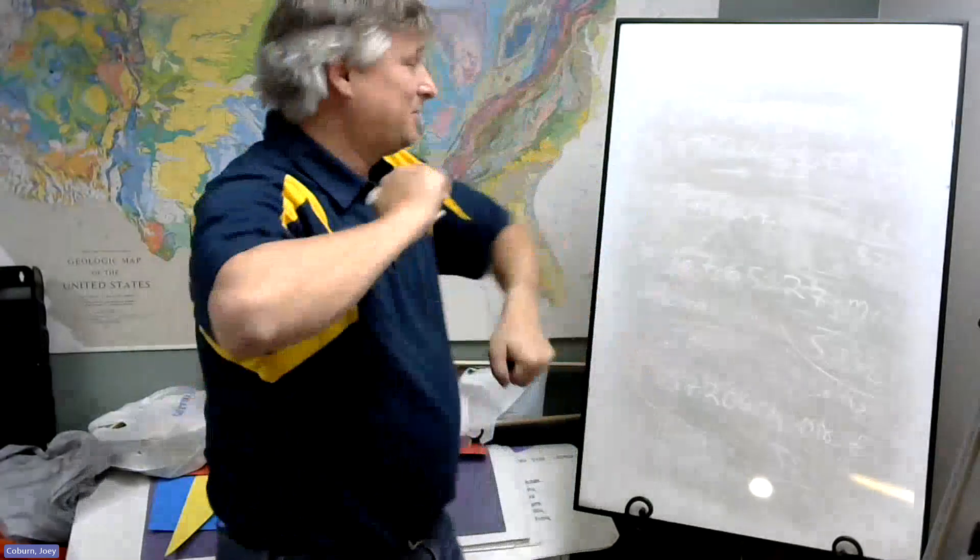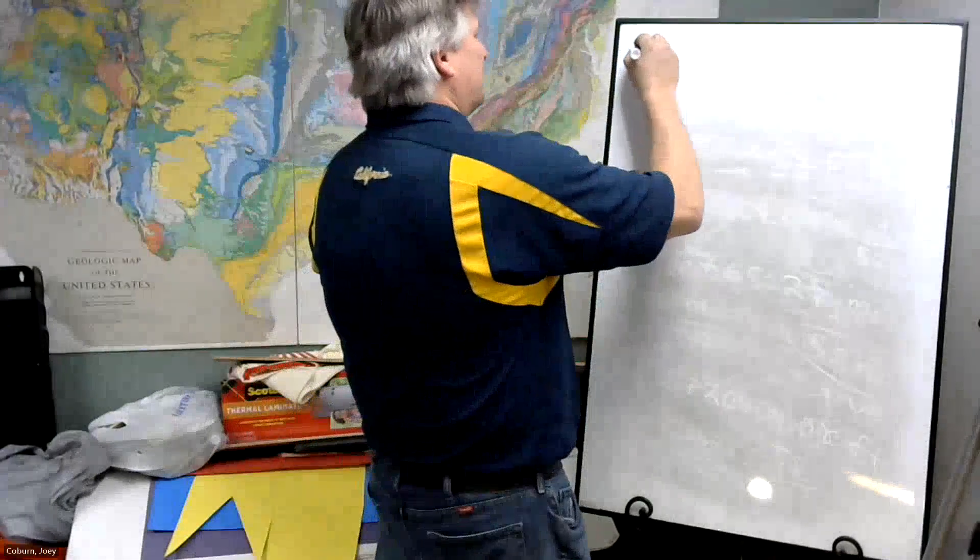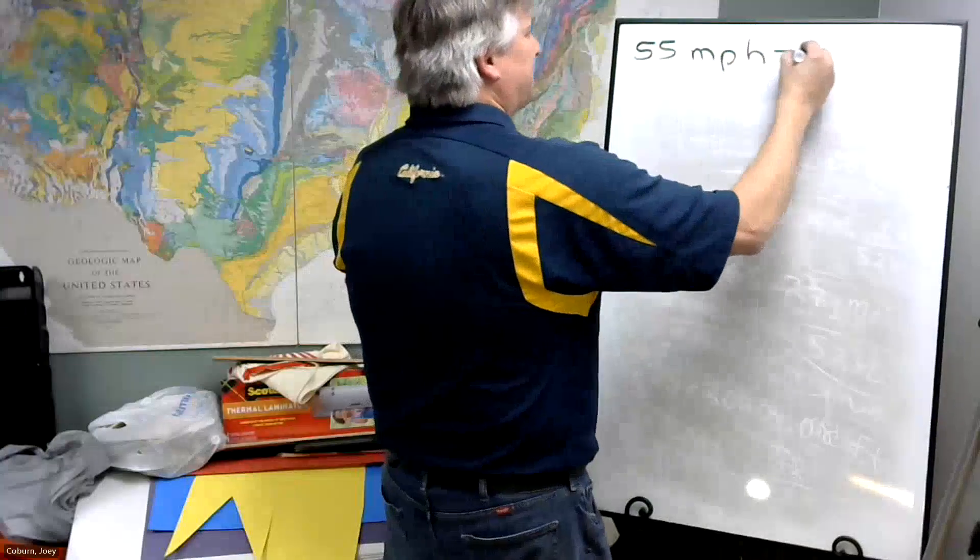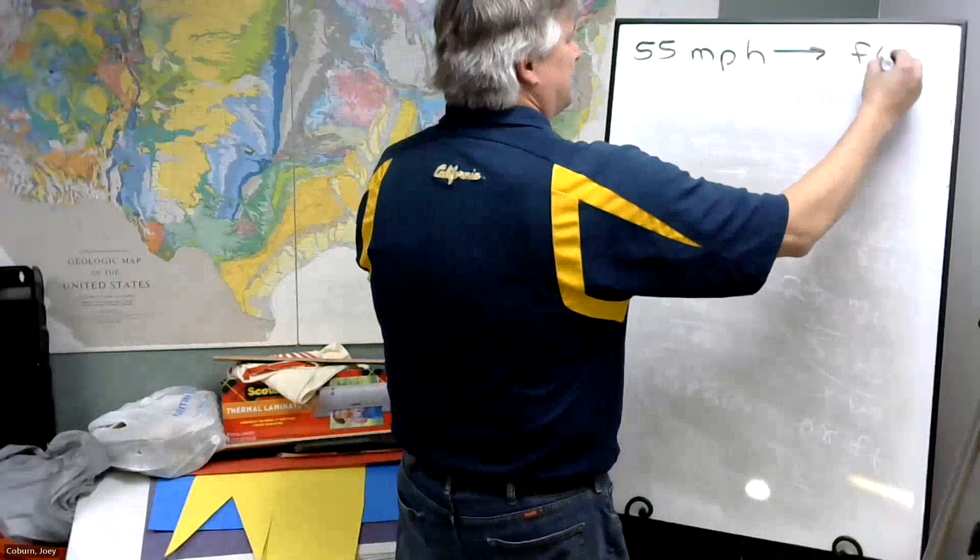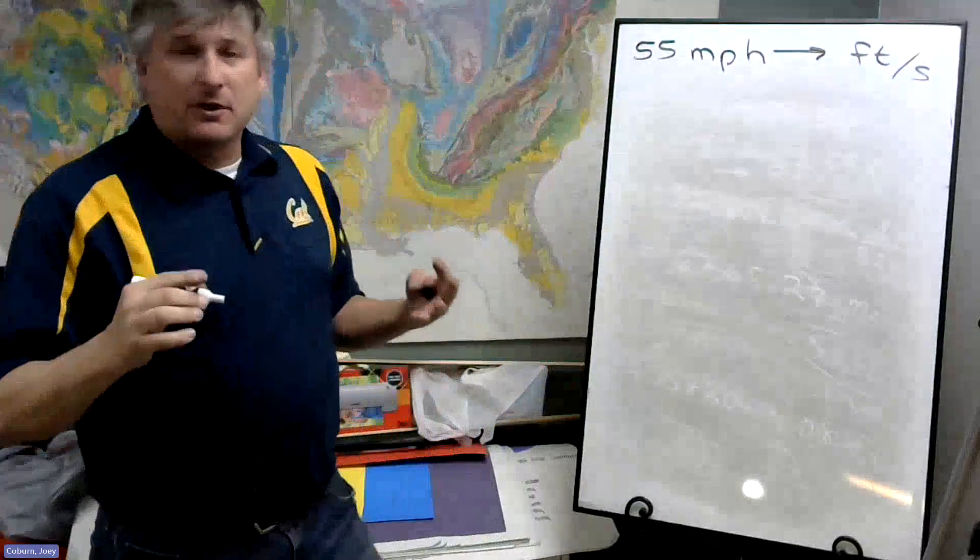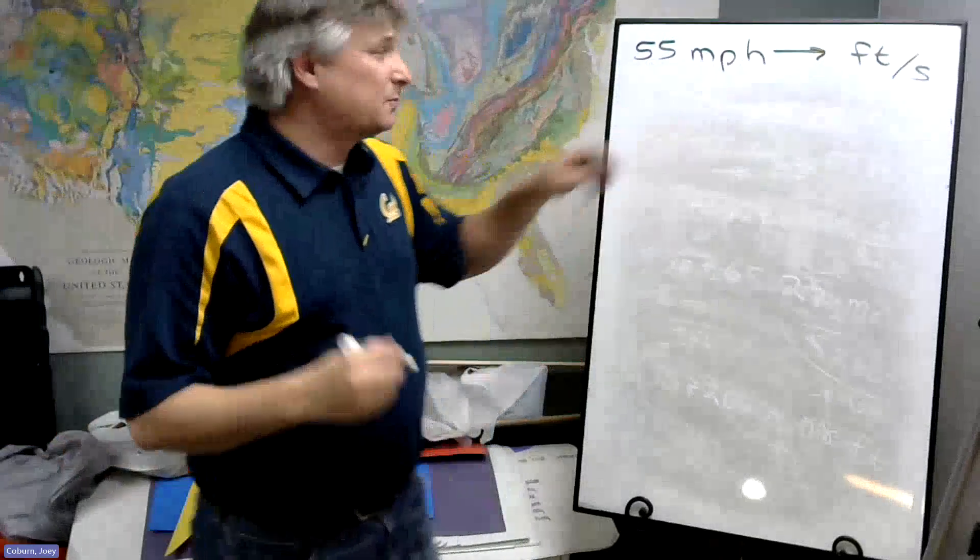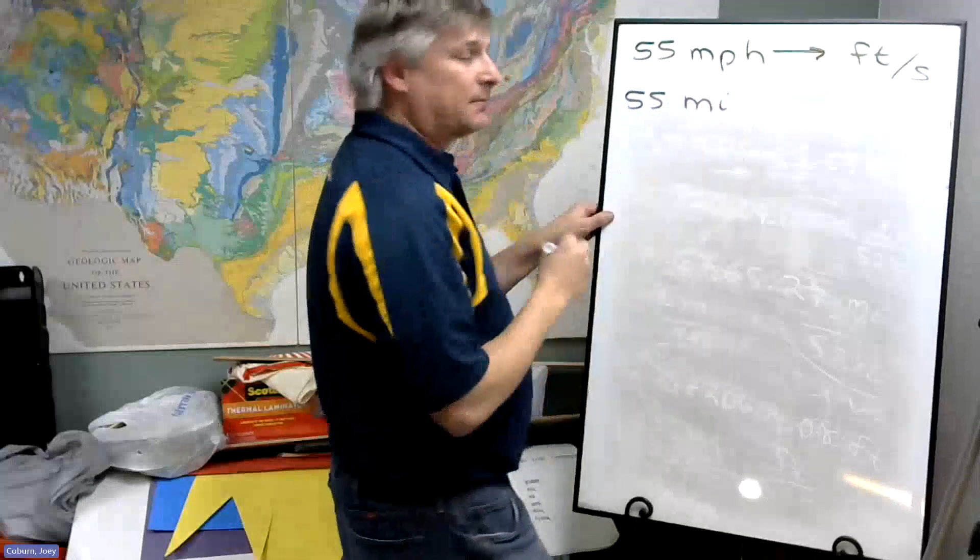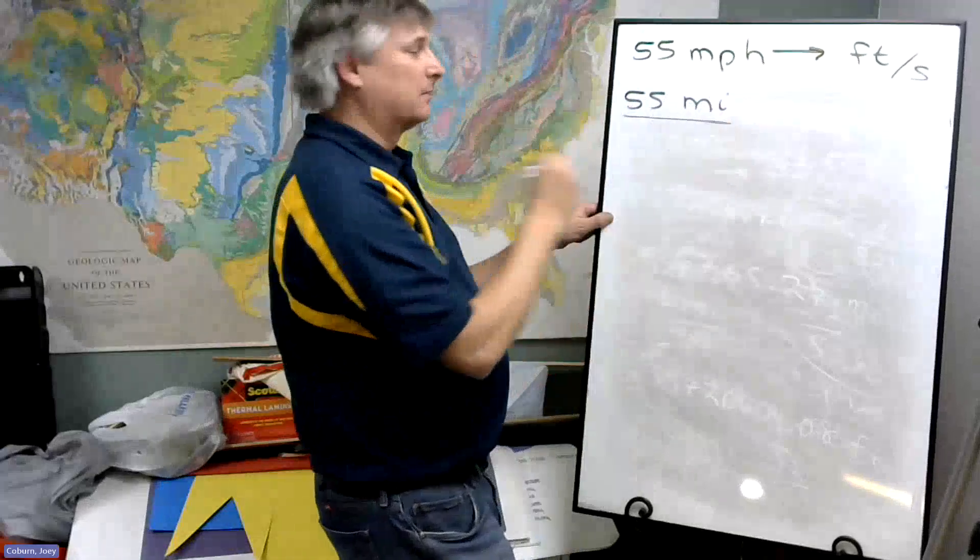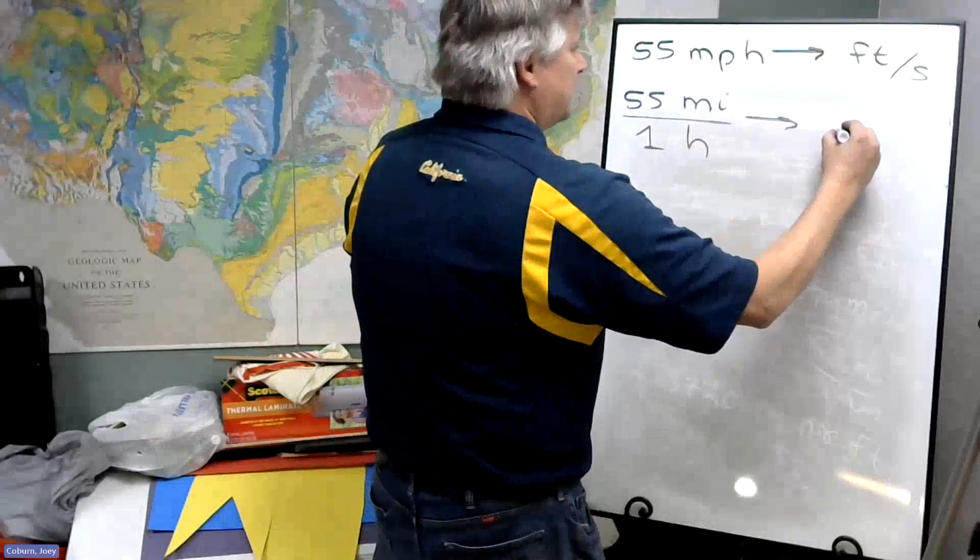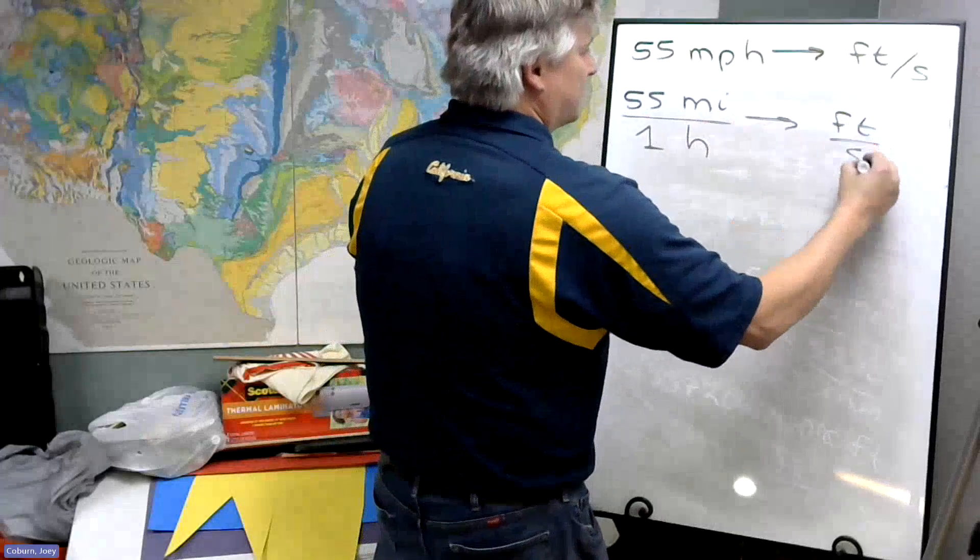Well, the next problem I want to consider is let's convert 55 miles per hour to feet per second. Now first off, when you're given something like this, what it really is saying is 55 miles per one hour. We want to send this to feet over seconds.